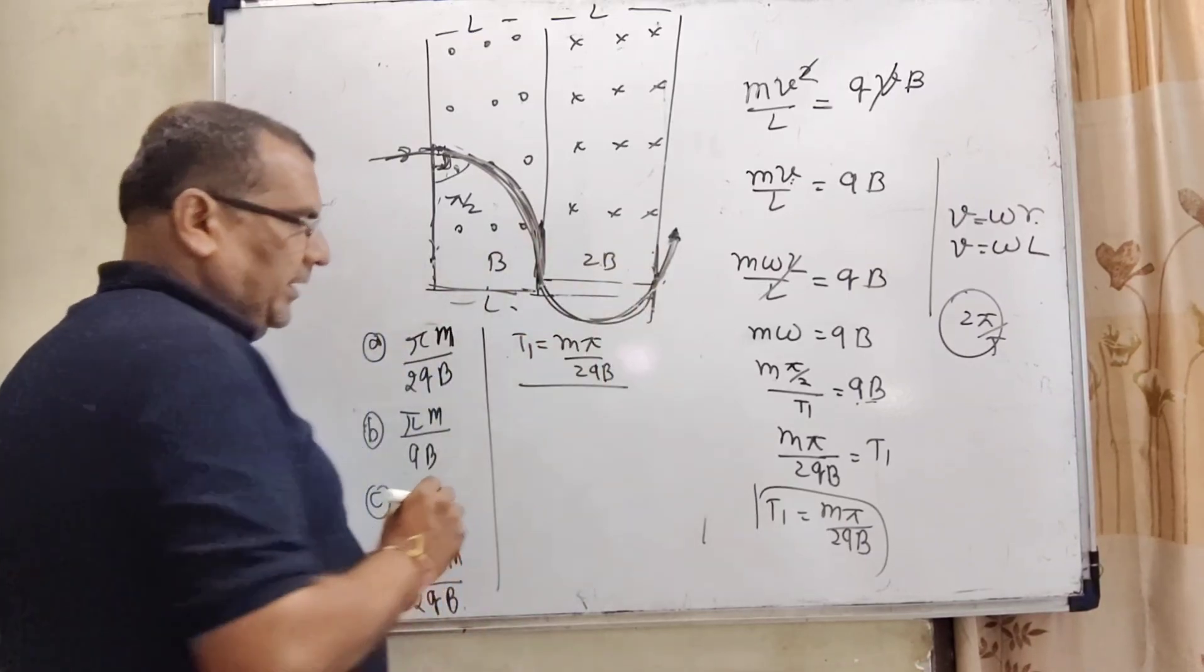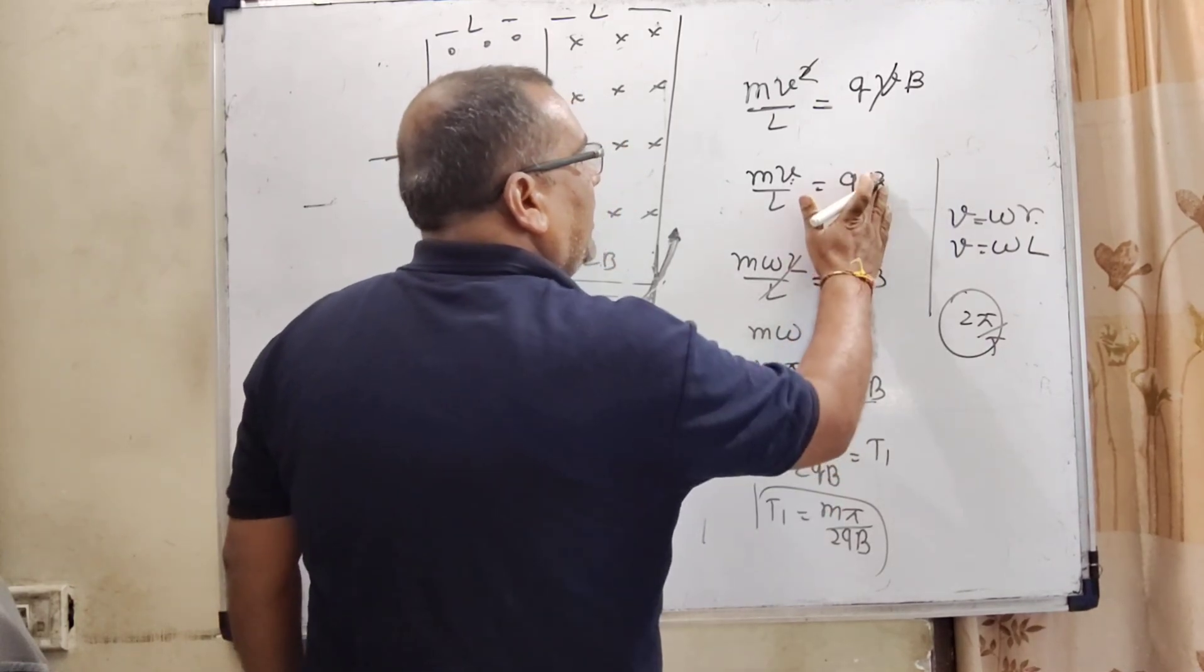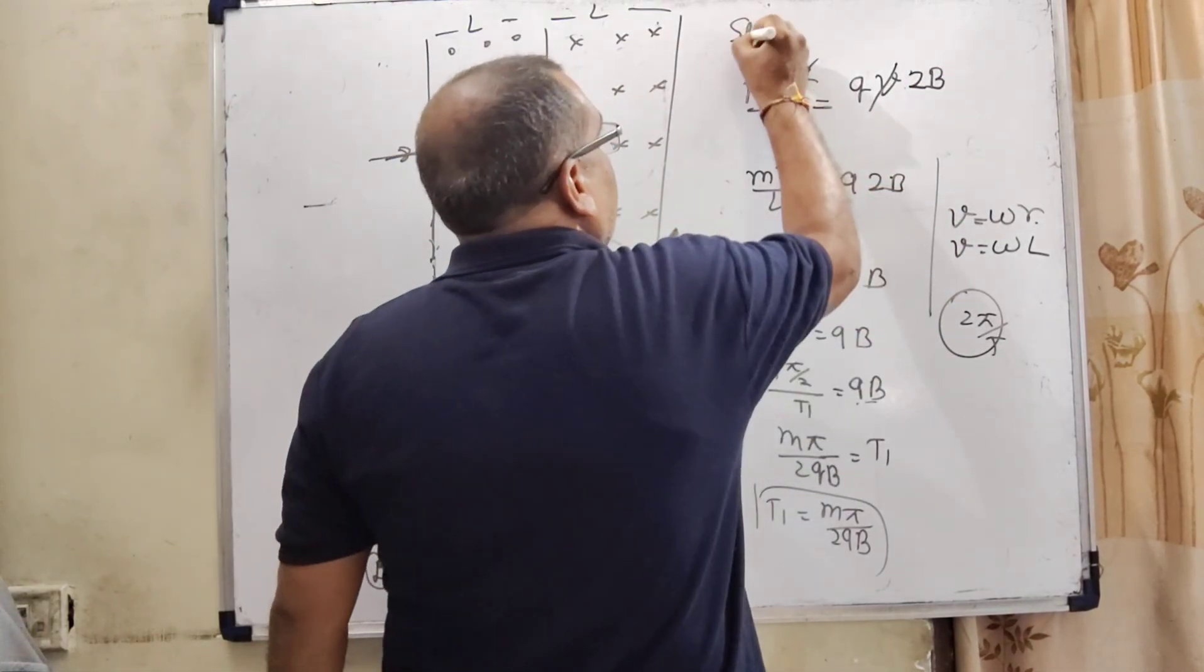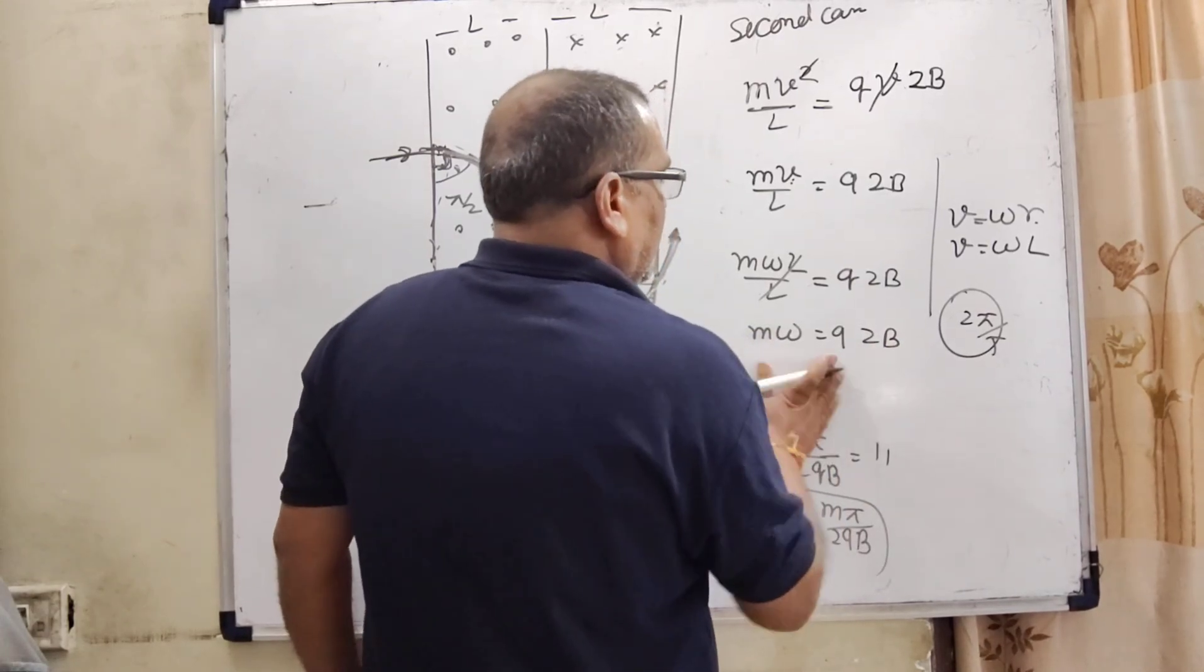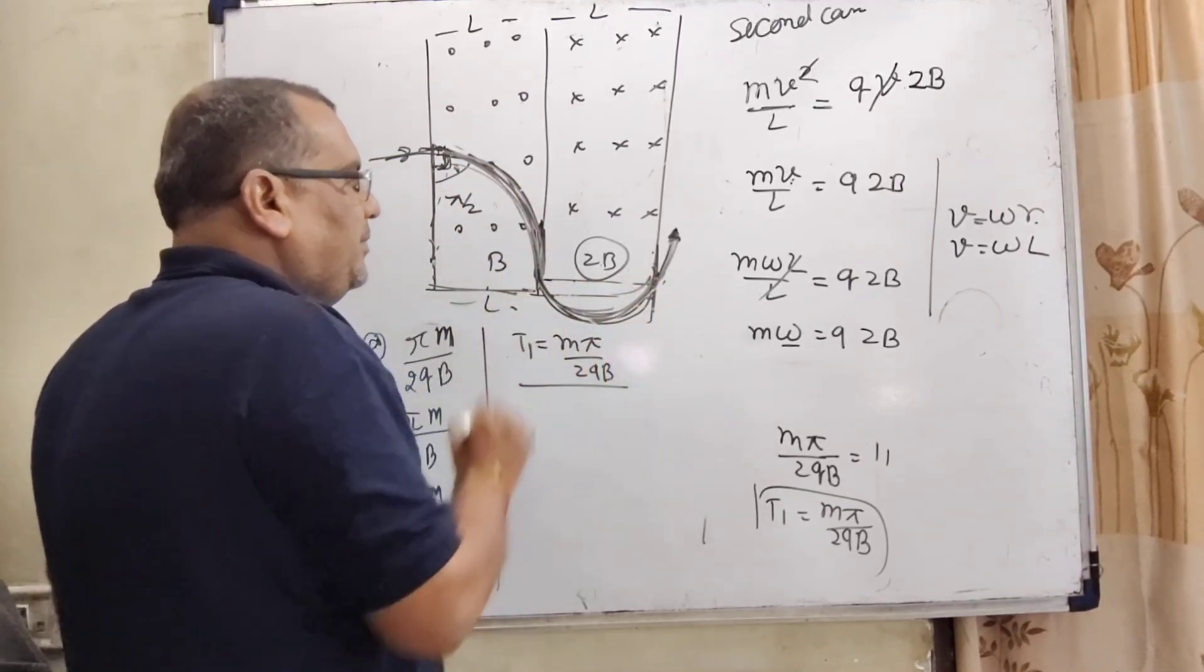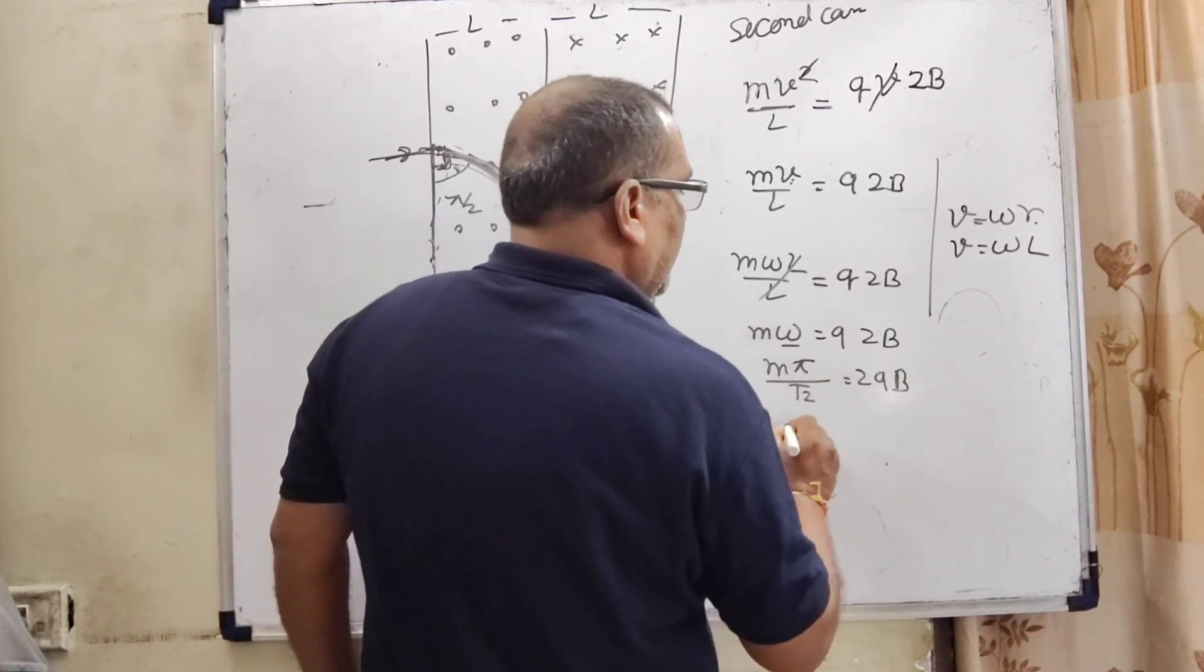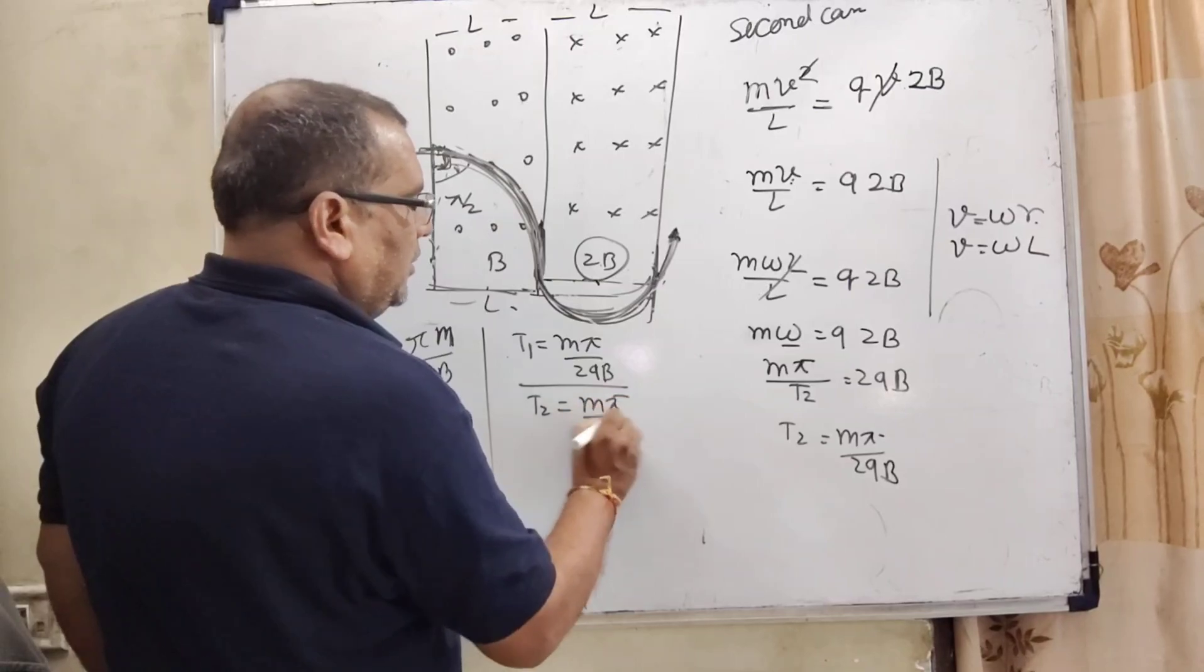For the time spent in this magnetic field, we have to calculate all formula, all things the same. Here, only here we have changing the magnetic field. Here, we have using the magnetic field given that is 2b. So, we have using 2b for the second case. Here, omega that is making angle, this is pi. This is semicircle. So, here, m making angle pi and time t2 and 2 qv. So, what is the formula now? t2 is equal to m pi by 2 qv.